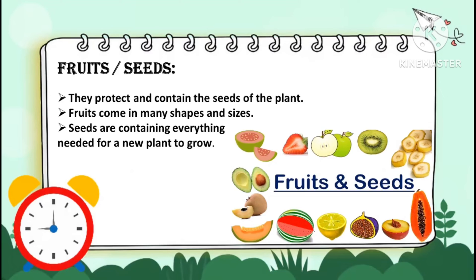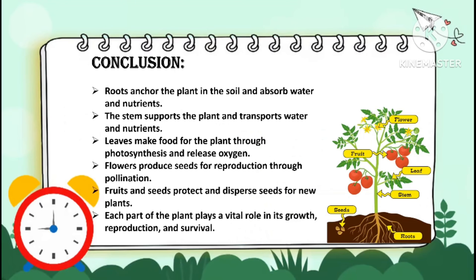In conclusion: roots anchor the plant in the soil and absorb water and nutrients. The stem supports the plant and transports water and nutrients. Leaves make food for the plant through photosynthesis and release oxygen.